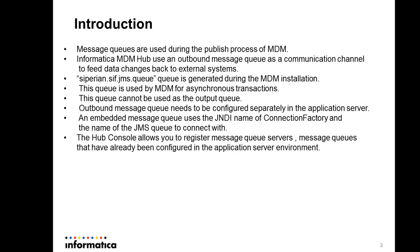In order to use the outbound queue, you need to create a new queue in the application server, which should be separate. You need to use the JNDI name of the connection factory and the JNDI name of the message queue to register it in the hub console.